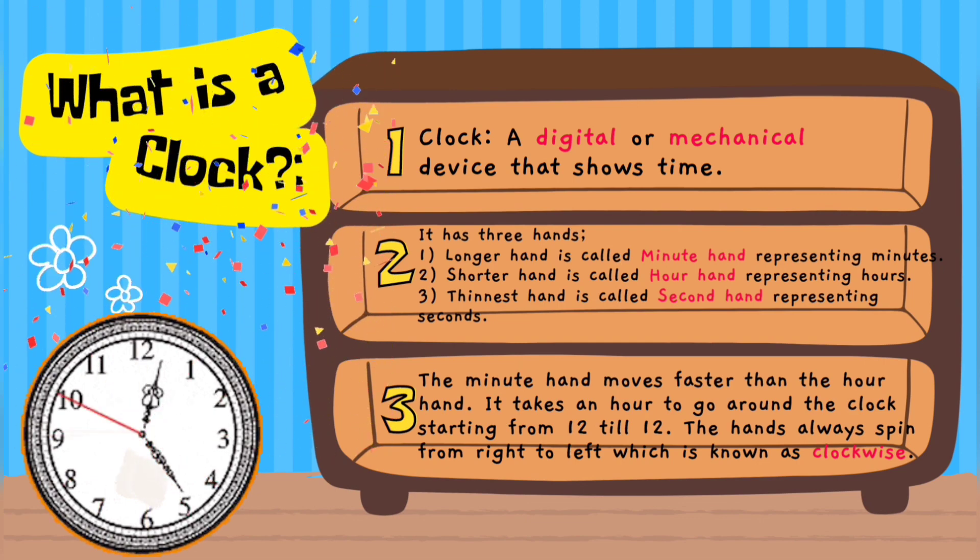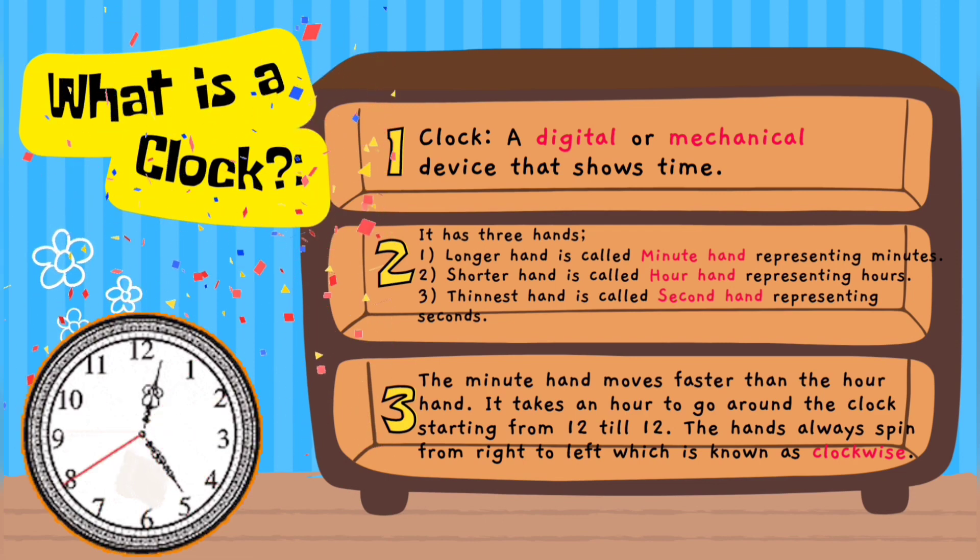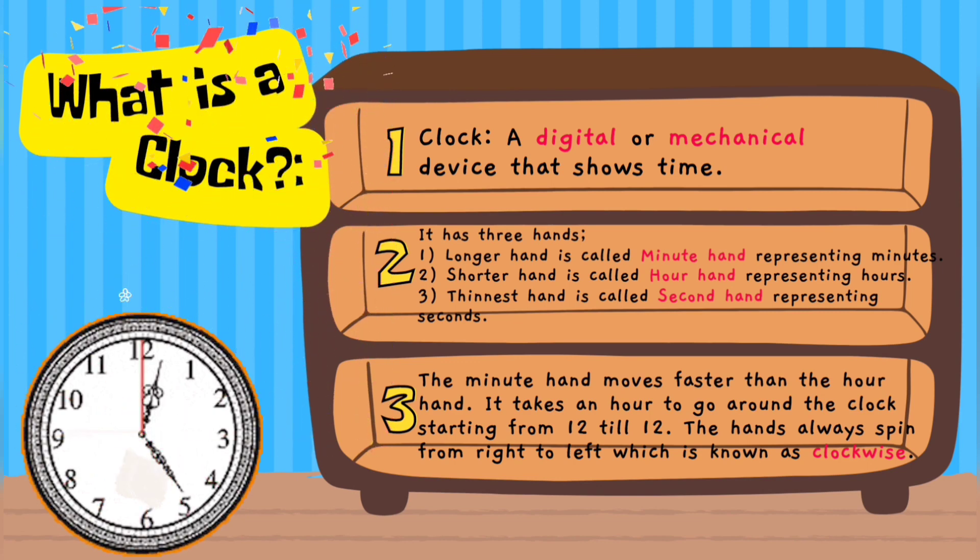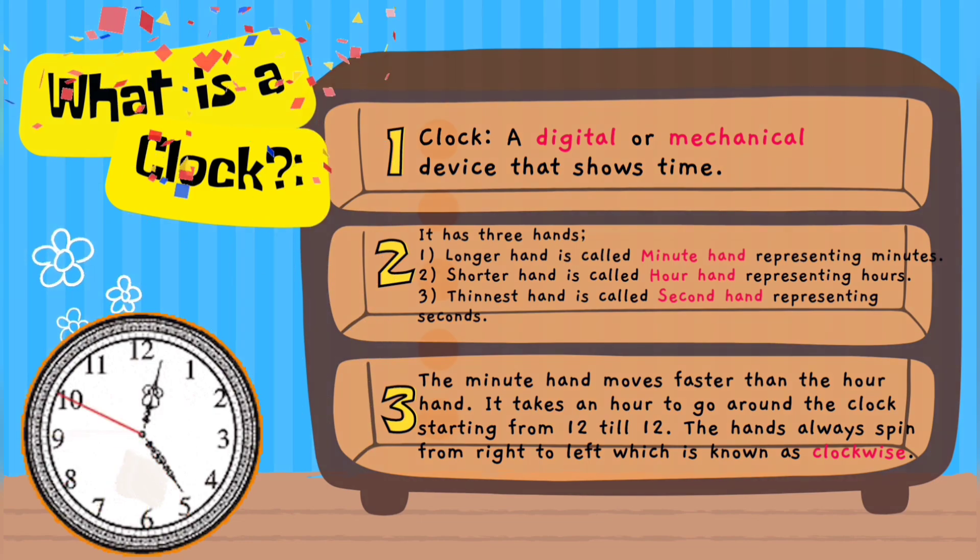The minute hand moves faster than the hour hand. It takes an hour to go around the clock, starting from 12 till 12. The hands always spin from right to left, which is known as clockwise.